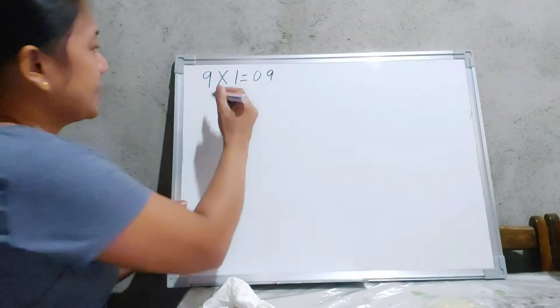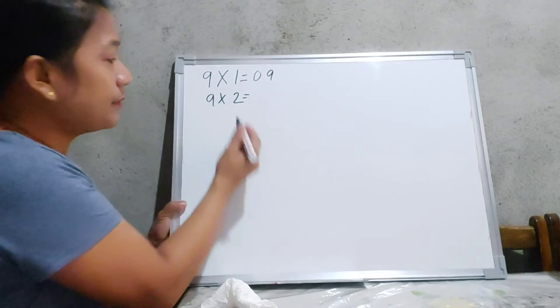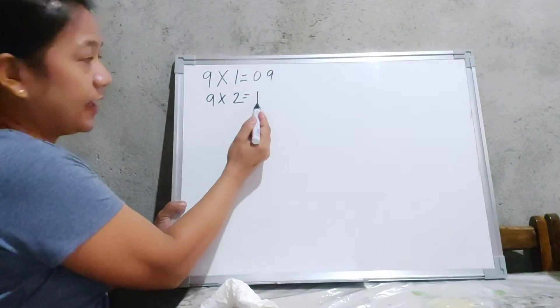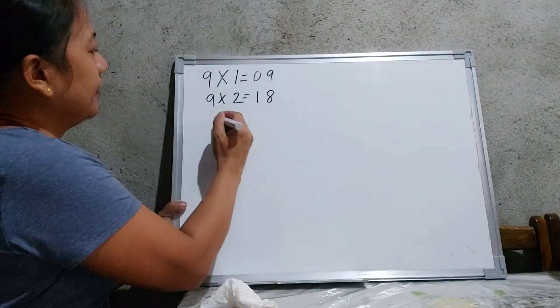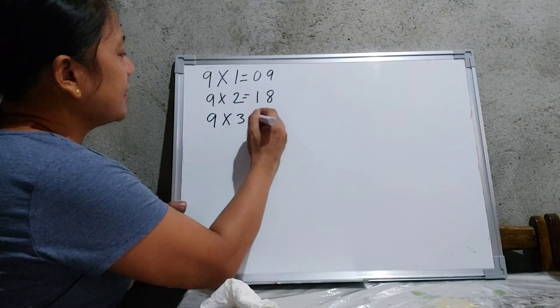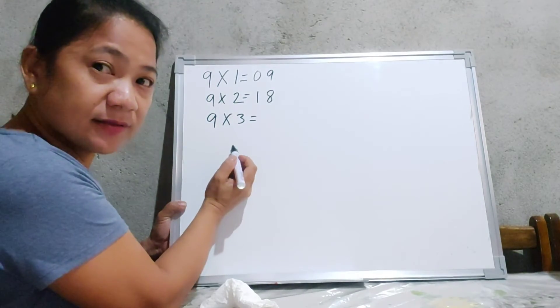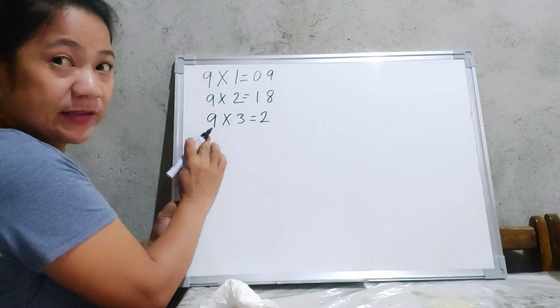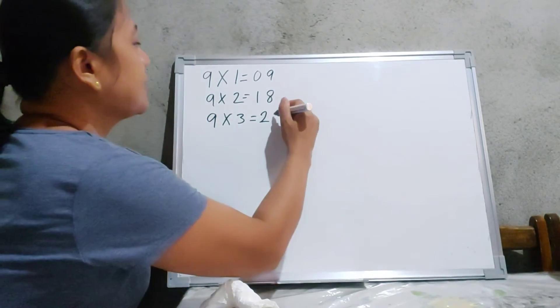Next one is 9 times 2. Number that comes before 2 is 1. And I will subtract it again to 9. 9 minus 1 is equal to 8. And next one is 9 times 3. Number that comes before 3 is 2. And 2 subtracting to 9. The answer is 9 minus 2 is equal to 7.